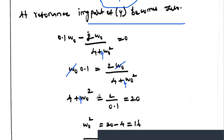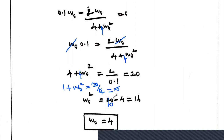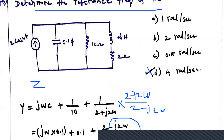After cancelling ω₀, we get 4 + 4ω₀² = 2/0.1 = 20. Taking 4 outside: 4(1 + ω₀²) = 20, so 1 + ω₀² = 5, giving ω₀² = 4. Therefore ω₀ = 2 radians per second. So 2 rad/s is the correct answer, not 4 rad/s.